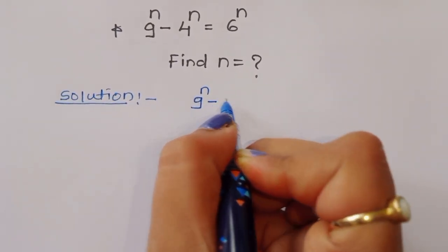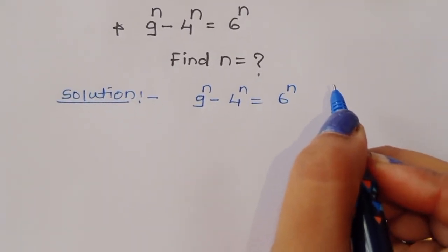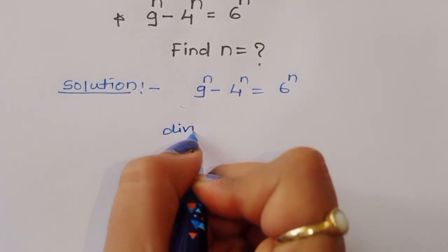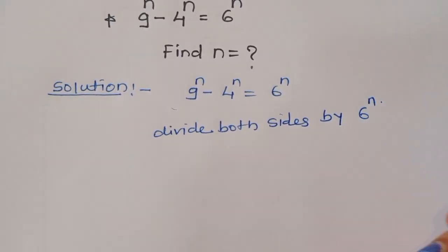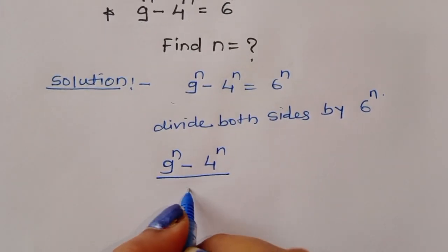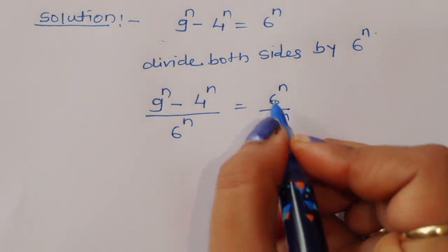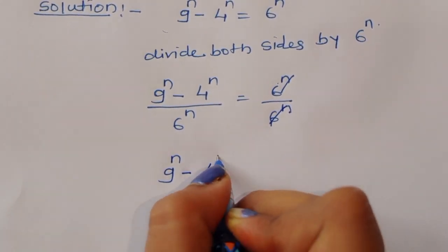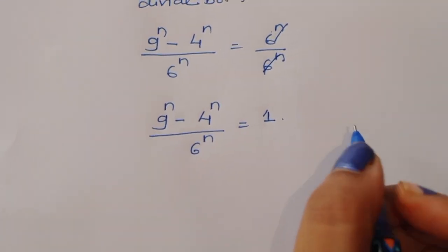9 power n minus 4 power n is equal to 6 power n. Now we can divide both sides by 6 power n. Then 9 power n minus 4 power n divided by 6 power n is equal to 6 power n divided by 6 power n, which gives us 1 on the right side.